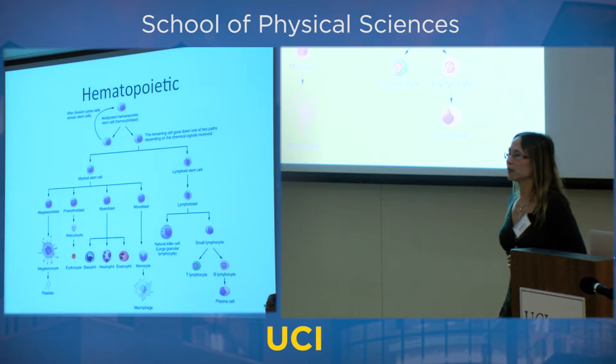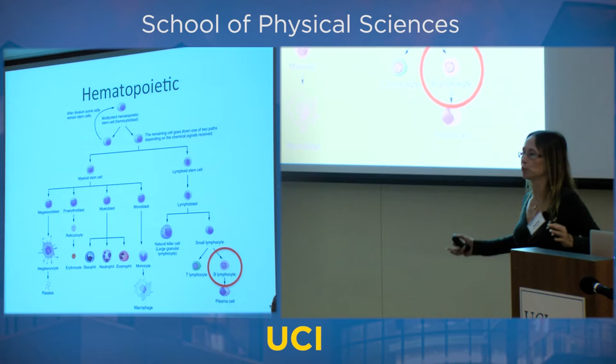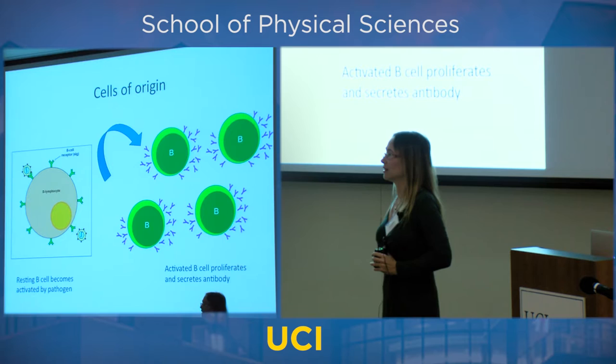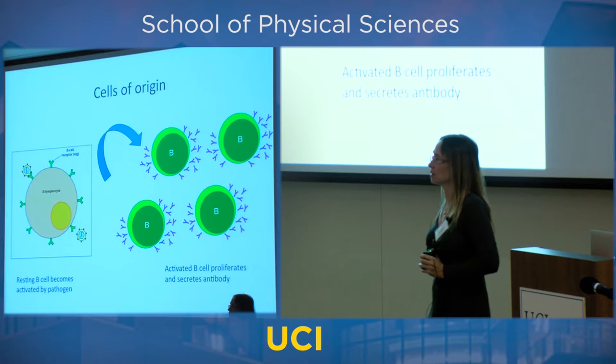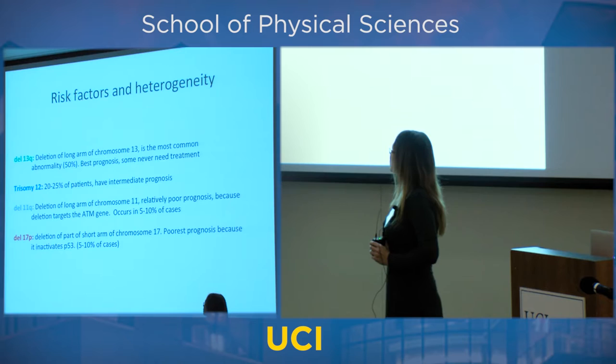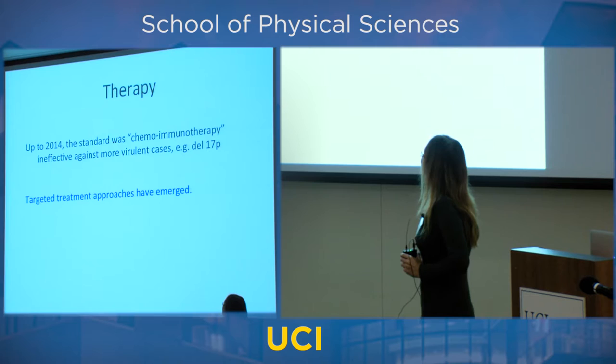This disease manifests in the B lymphocyte — a type of immune cell that creates antibodies. These cells multiply and eventually kill the patient. There are different types of the disease depending on the mutations found in the cells. One type is the most benign with the best prognosis; another is more or less deadly, and traditional drugs simply don't work for it. In 2014, a new drug was invented called ibrutinib.